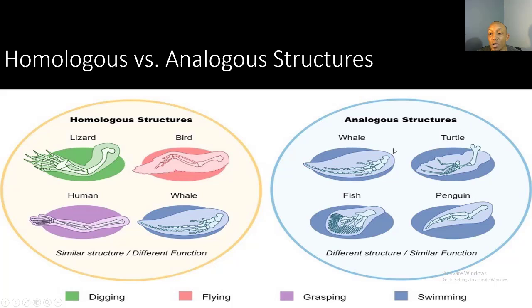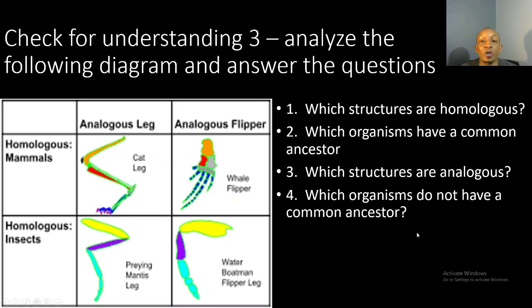Looking at the analogous structures: the whale, turtle, fish, and penguin all have structures designed for swimming, but the actual structures of each organism are different. Those different structures tell us they do not share a common ancestor — they have a common function but different structures. Now it's time for your third check for understanding. Analyze the following diagram and answer the questions. You have two minutes — pause the video now.